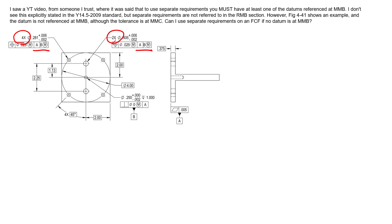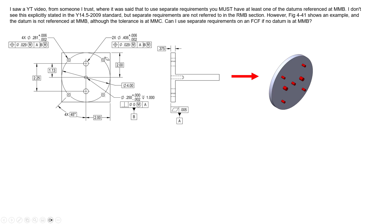The ASME Y14.5 simultaneous requirements rule requires both patterns to be clocked together, even though we don't have a datum feature that can clock the degree of rotation about the axis. Datum A is this plane and datum B is the center feature. We have not controlled all six degrees of freedom with datum reference frame A-B, but we don't have to. We can lock in just five degrees of freedom and lean on simultaneous requirements to control rotational location of both patterns about datum axis B.